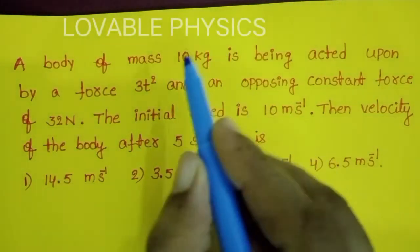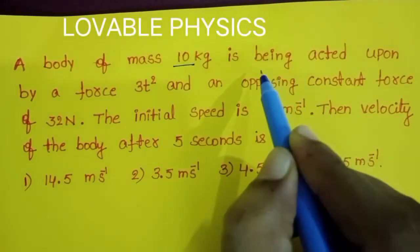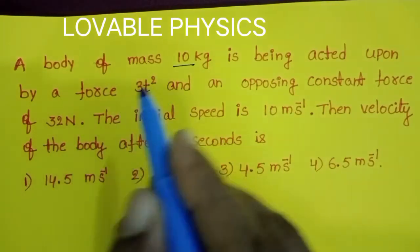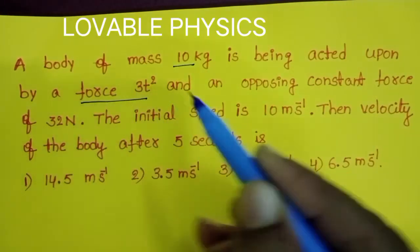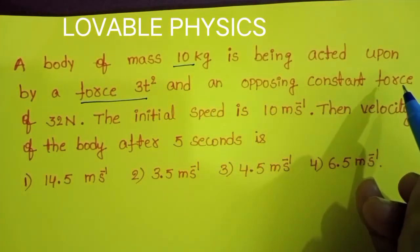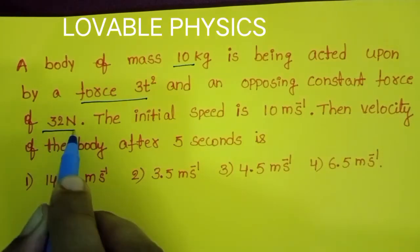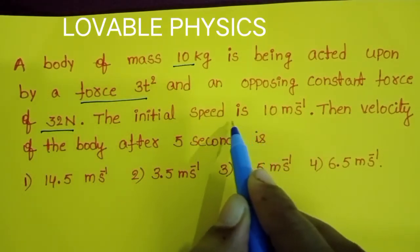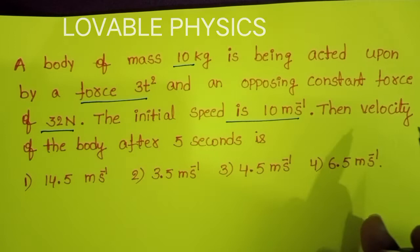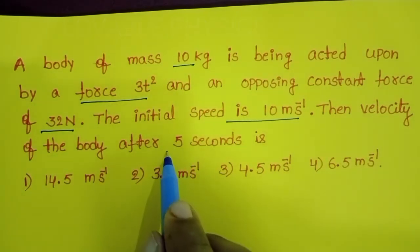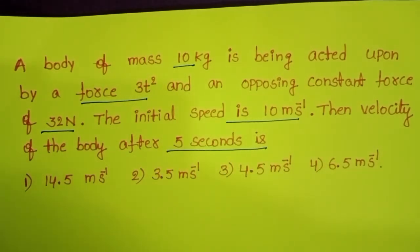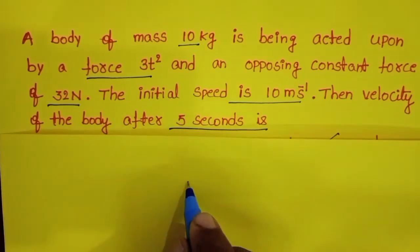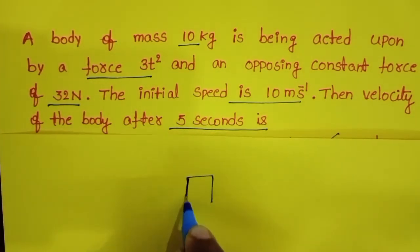A body of mass 10 kg is being acted upon by a force 3t² and an opposing constant force of 32 N. The initial speed is 10 m/s. Then the velocity of the body after 5 seconds is to be found.